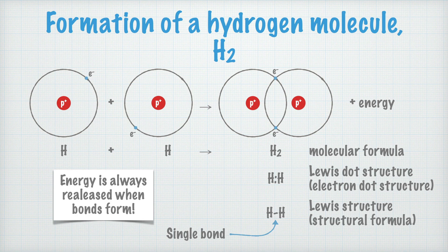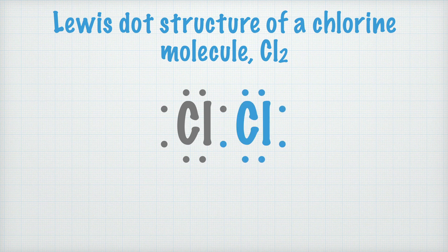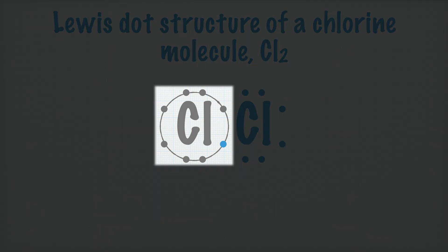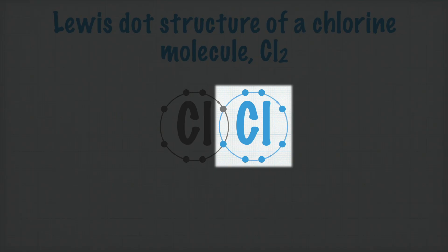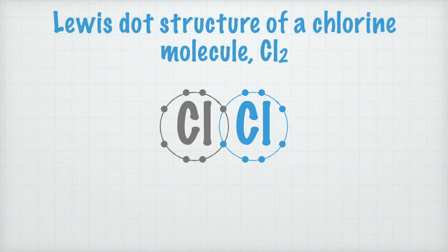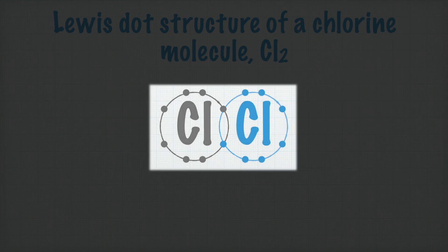Now let's look at chlorine and how to draw the Lewis dot structure for the molecule. Chlorine has seven valence electrons. Drawing another chlorine atom right beside the first one, the gray chlorine atom gets noble gas structure because it has borrowed an electron from the blue chlorine atom — it has eight valence electrons, just like the noble gases except helium. Likewise, the blue chlorine atom gets noble gas structure by borrowing an electron from the gray one. The chlorine atoms share an electron pair, and this is why chlorine is a diatomic molecule.